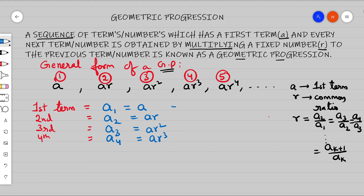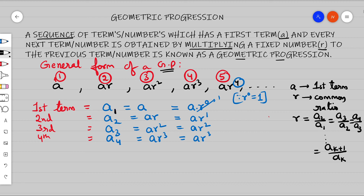We observe a common symmetry throughout: the first term 'a' can be written as a·r⁰, since any number to the power zero is one. The second term is a·r¹, the third term is a·r², the fourth term is a·r³. The pattern is clear — when the subscript is n, the exponent of r is always one less than the subscript, i.e., n−1.